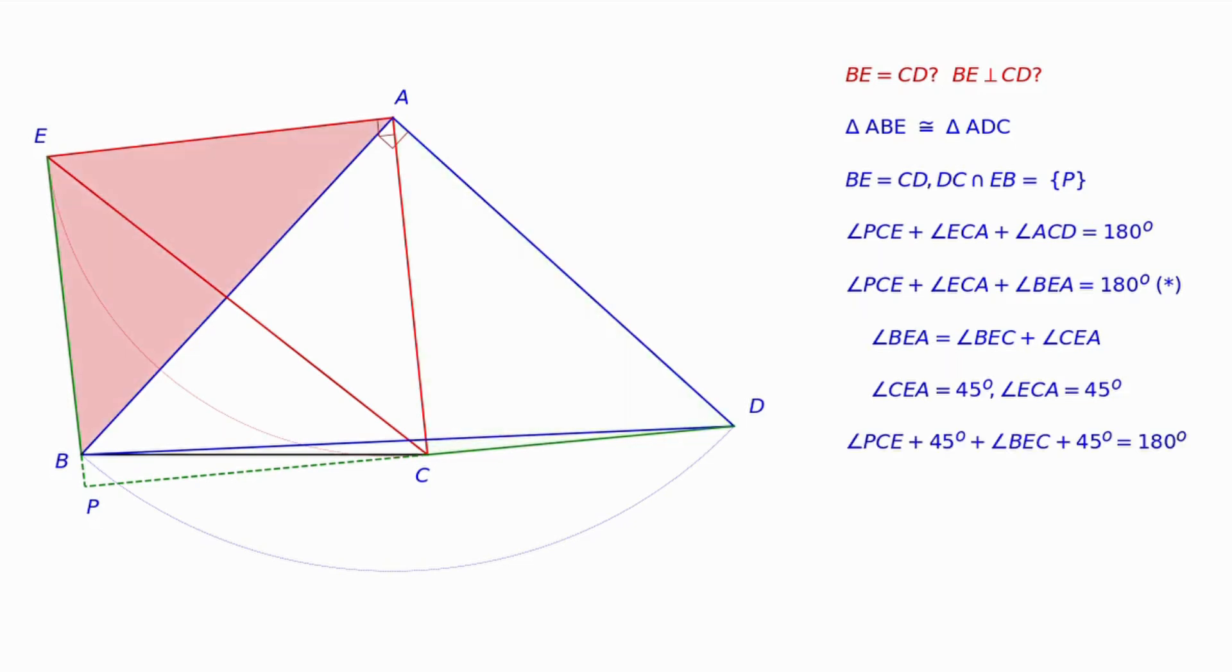Putting these conclusions together in the star equation we get the sum of angles PCE and BEC equals 90 degrees, after a further simplification step.